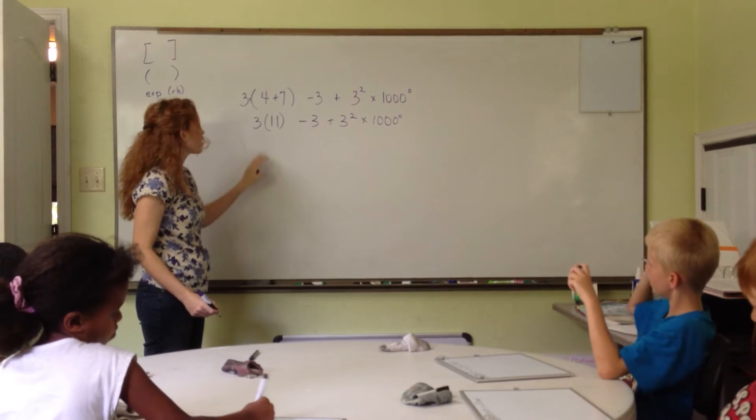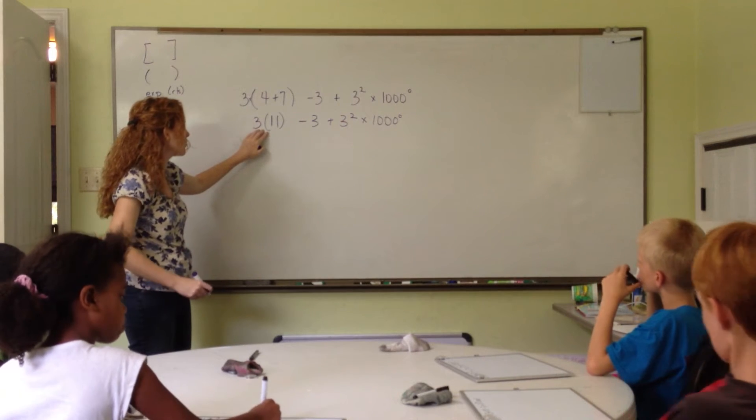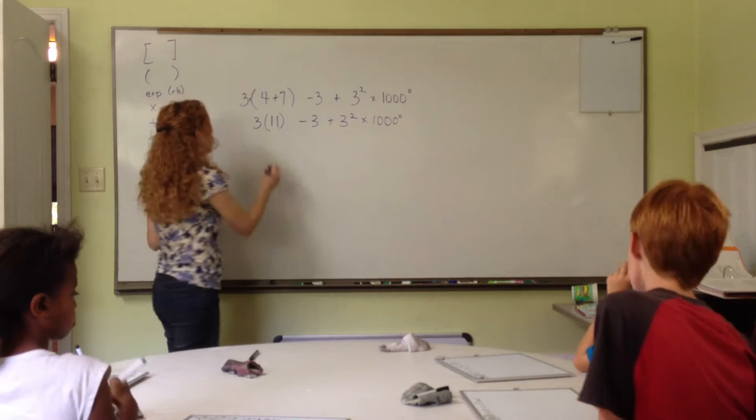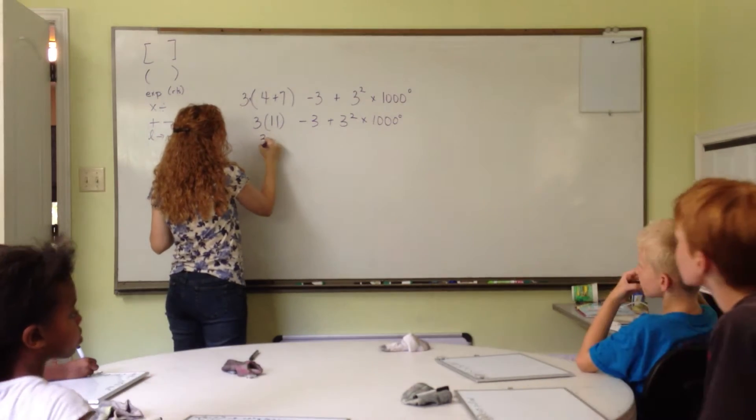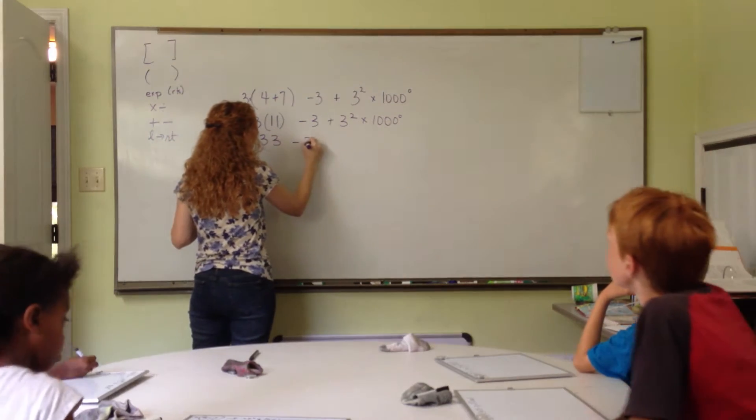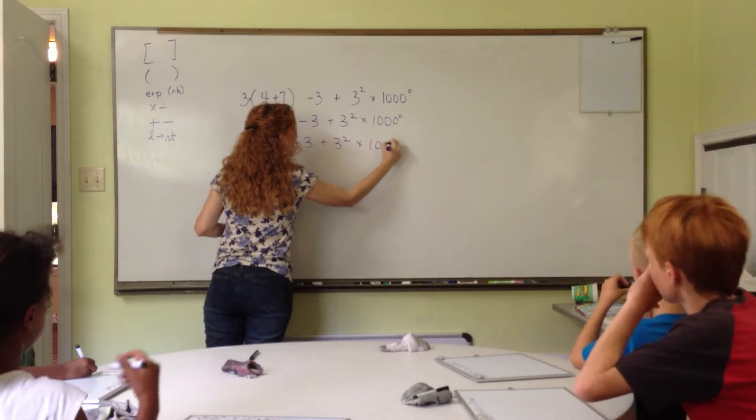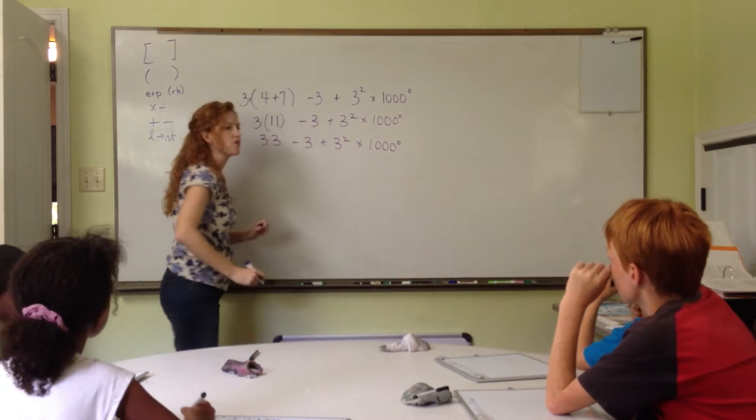Okay, what are we going to do next? We're going to do parentheses. Go ahead and take care of our parentheses. Oh, three times 11? Yeah, we can go ahead and do three times 11, which would be 33.